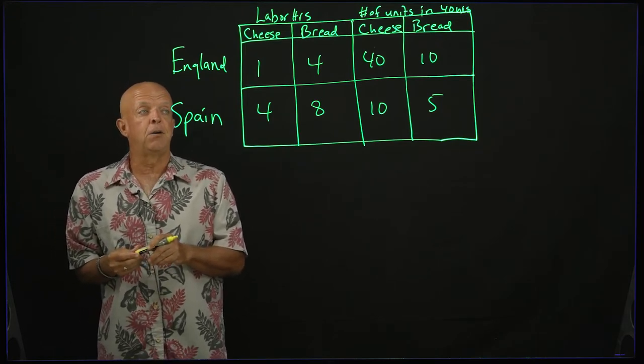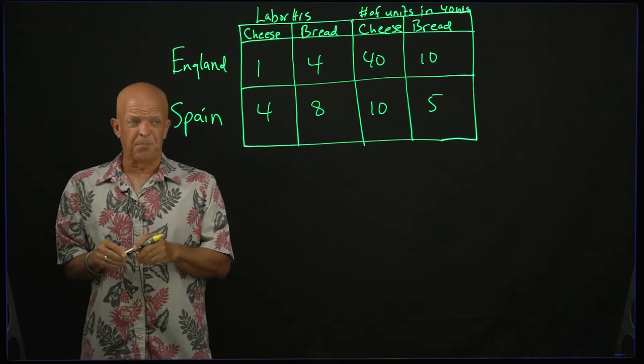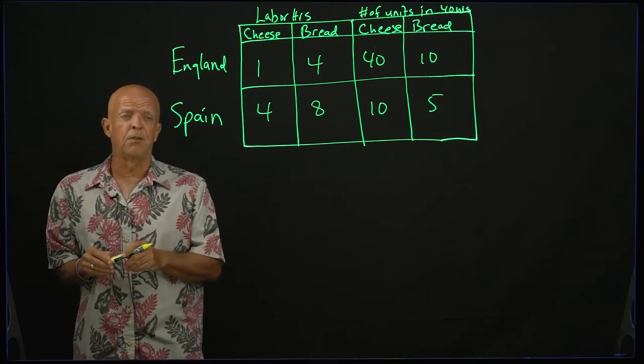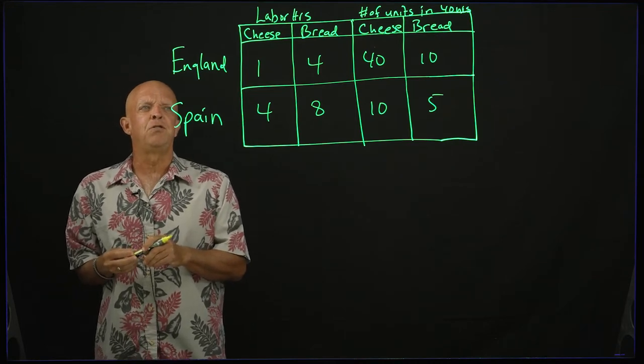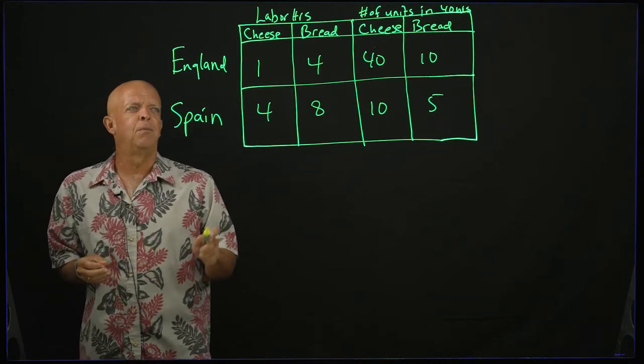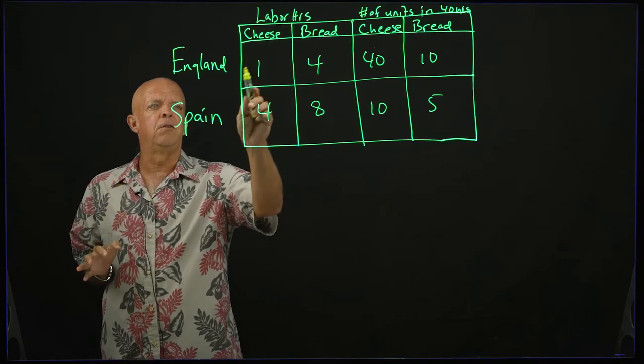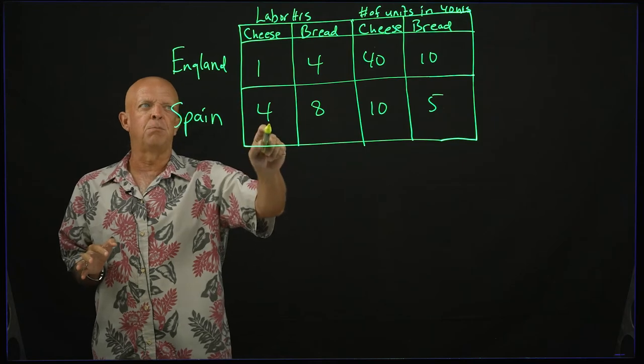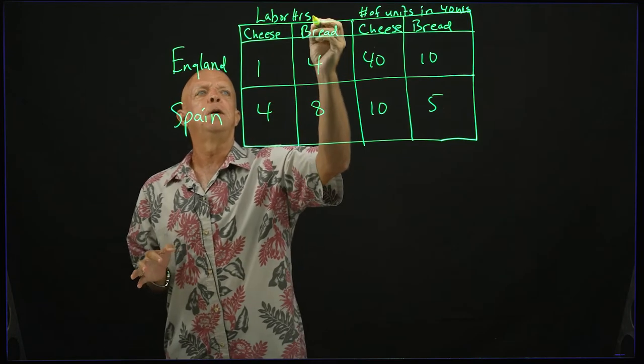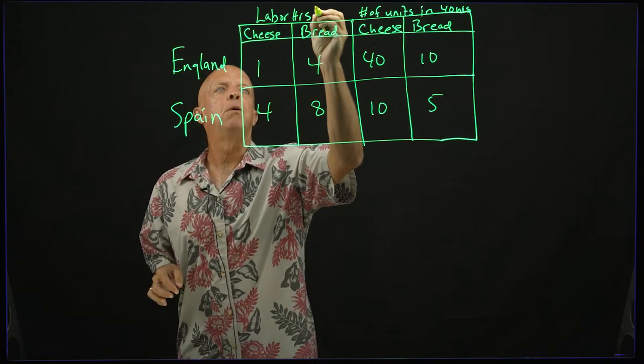So here we've got a question that is actually taken from the practice questions. It's England and Spain producing cheese and bread. Now, what you oftentimes see is labor hours, the amount of hours used to make cheese and bread, this is per, to make one unit of,